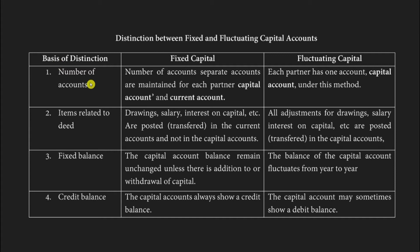On the basis of number of accounts: in the fixed capital method, we open two separate accounts for each partner — one capital account and one current account. In the fluctuating capital method, each partner also has their own account, but only a capital account. Under this method, we don't open a current account — only one account is needed.